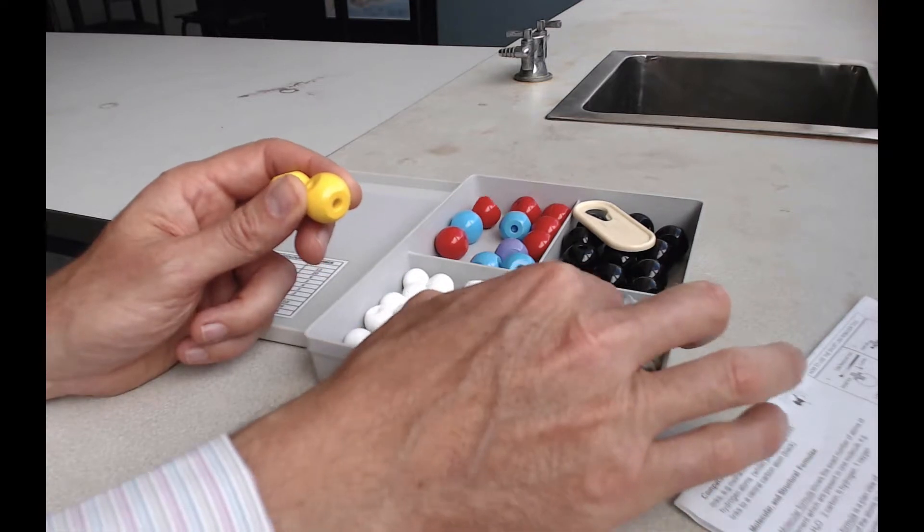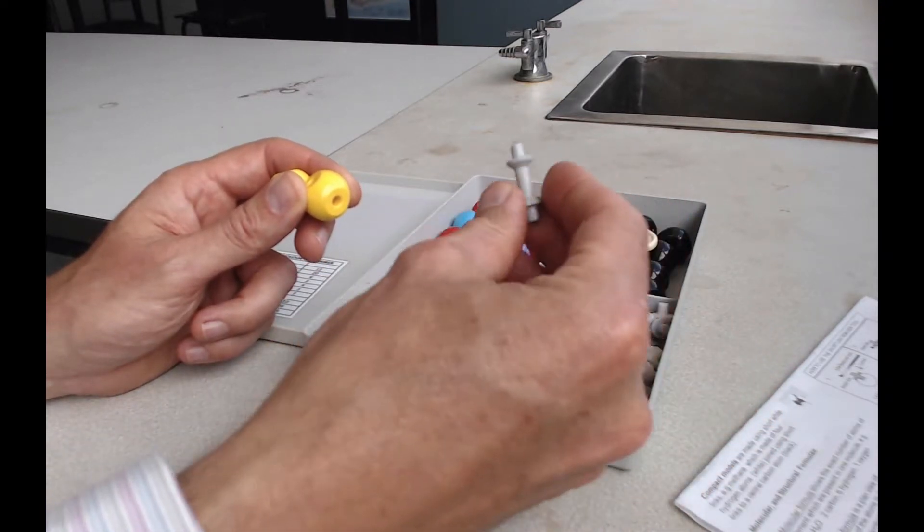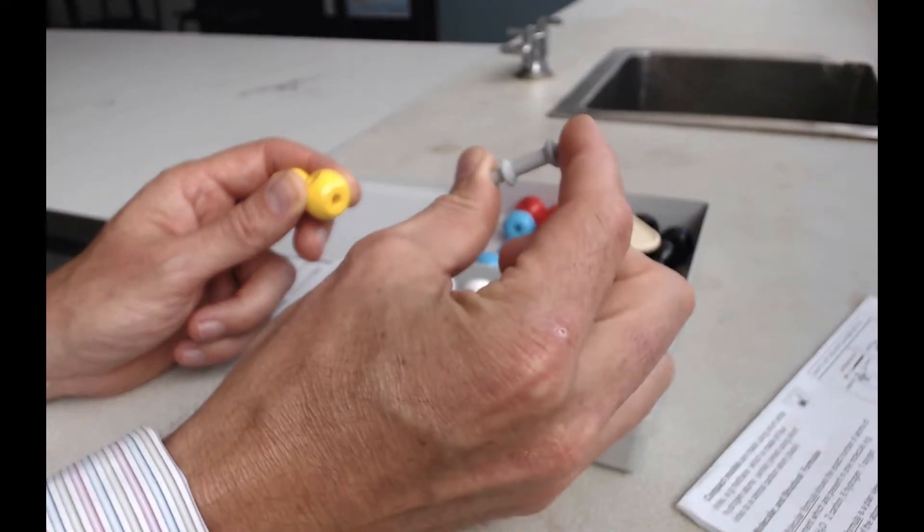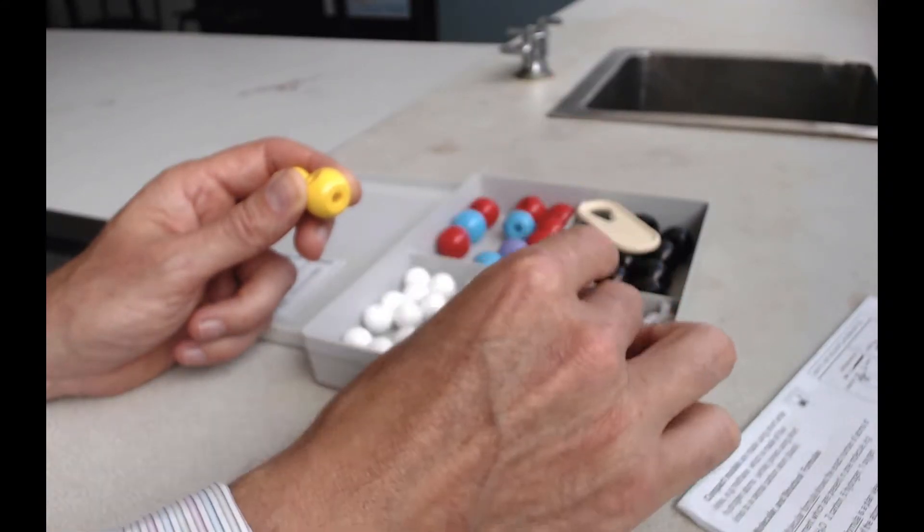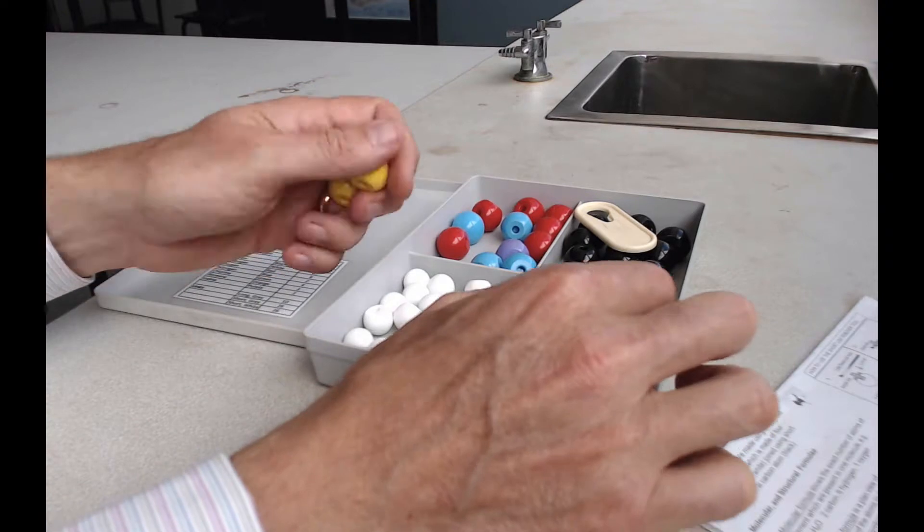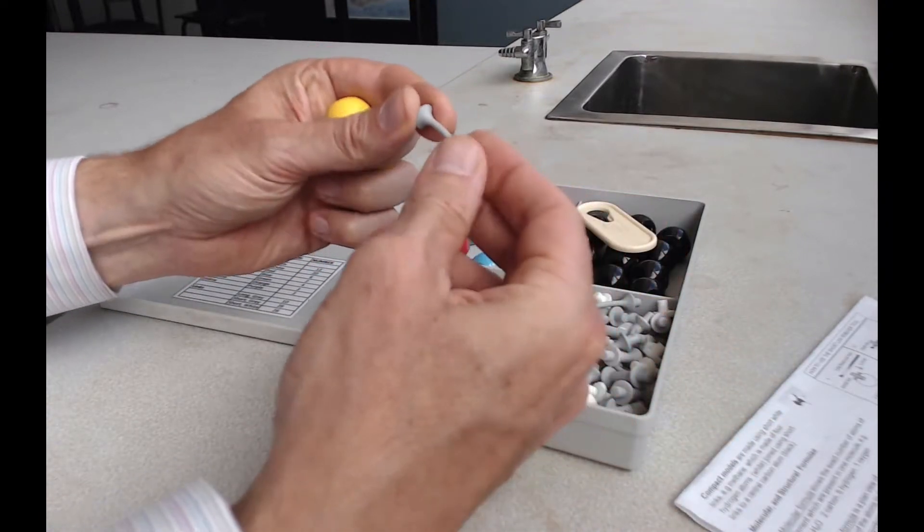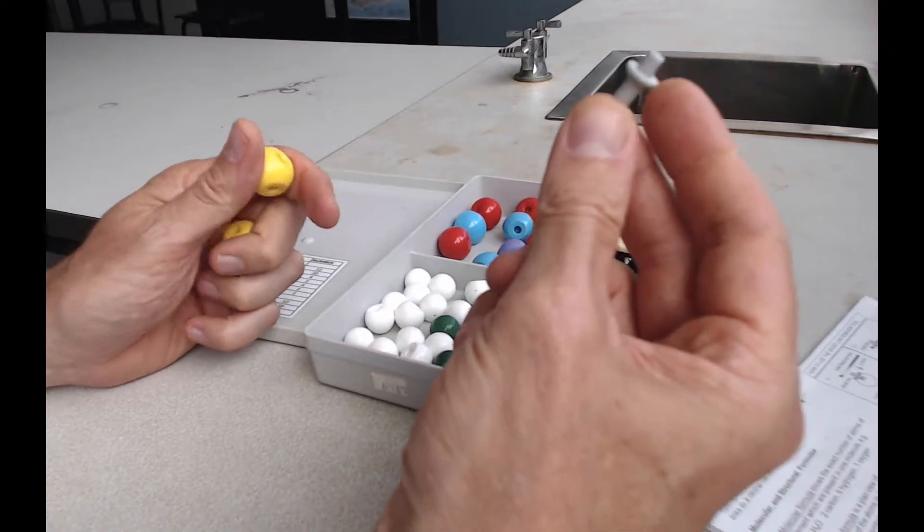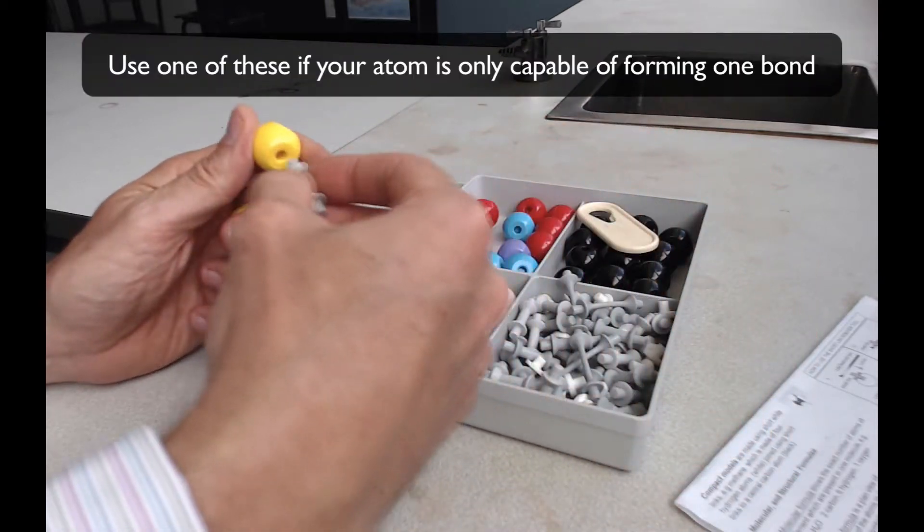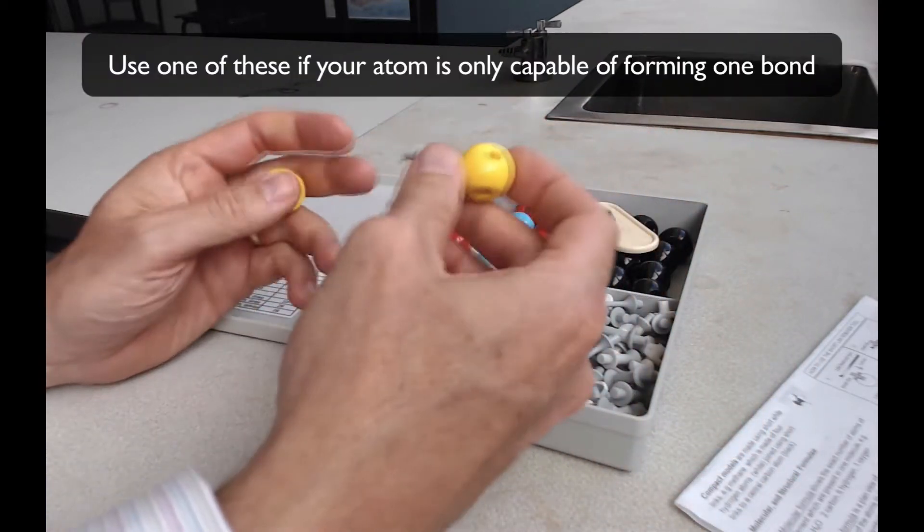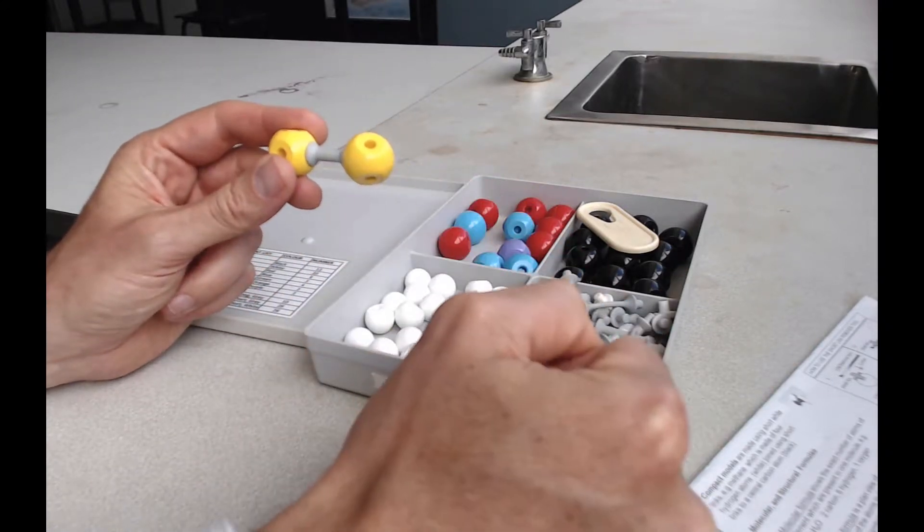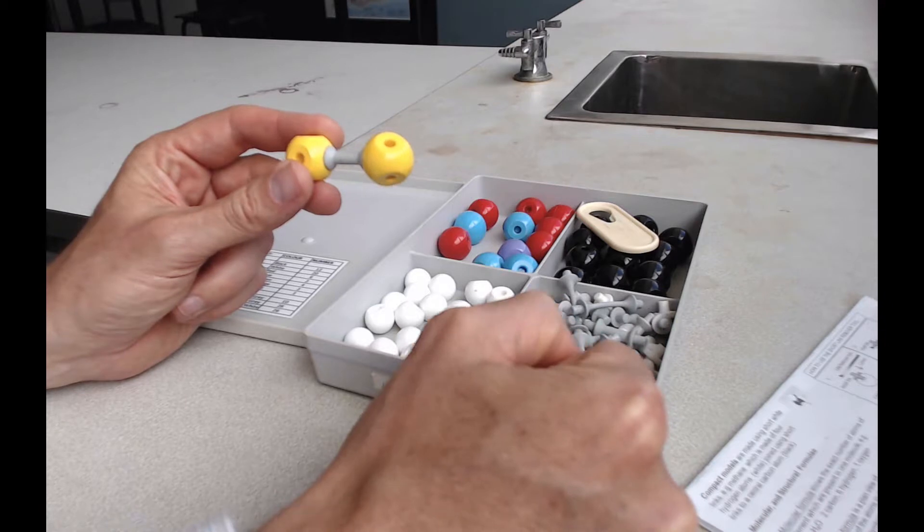So the point of these bonds here, the gray ones that are quite short and rigid compared to these long ones here which are a bit longer and a bit more flexible. These ones here are for making single bonds. So if you want to put a single bond between two atoms, that's what a single bond is going to look like.